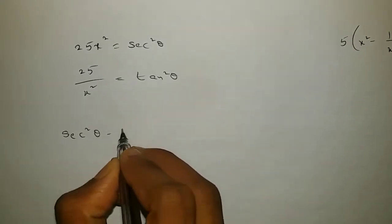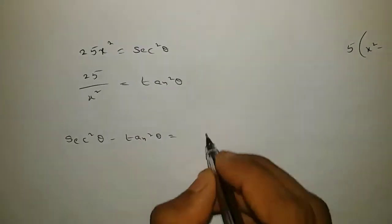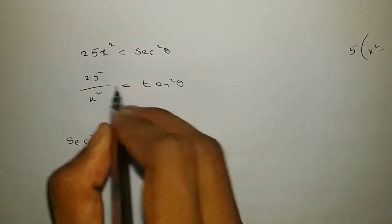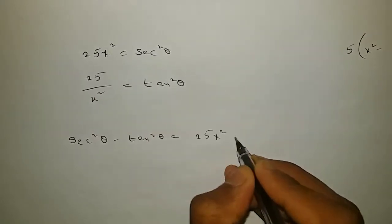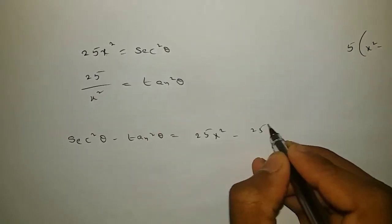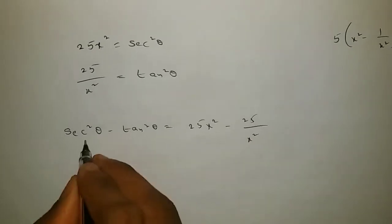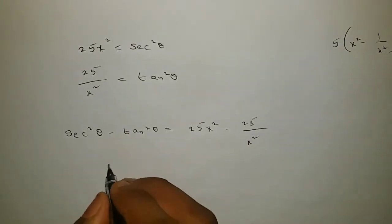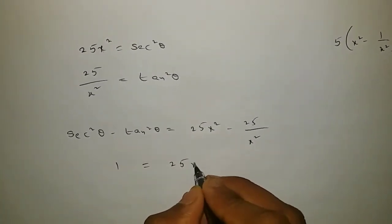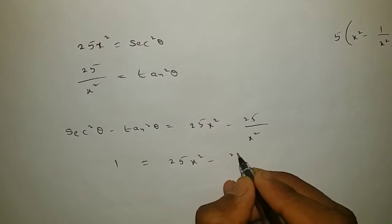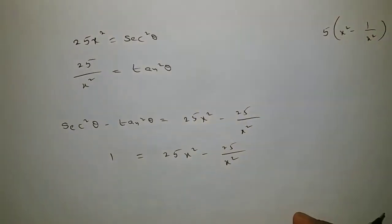Secant squared theta minus tan squared theta equals first equation minus second equation, that is f squared times x squared minus f squared by x squared. Secant squared theta minus tan squared theta equals 1, which equals f squared times x squared minus f squared by x squared.